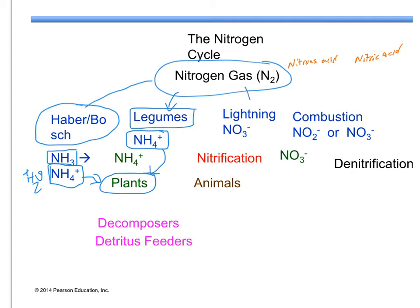Our third method is lightning. Lightning fully oxidizes the nitrogen in the atmosphere to a nitrate, and nitrate can be directly absorbed by plants.